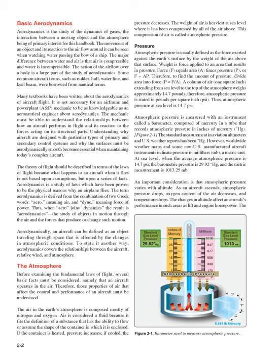Pressure: Atmospheric pressure is usually defined as the force exerted against the earth's surface by the weight of the air above that surface. Weight is force applied to an area that results in pressure: F = A × P. To find the amount of pressure, divide area into force: P = F/A. A column of air 1 inch² extending from sea level to the top of the atmosphere weighs approximately 14.7 pounds; therefore, atmospheric pressure is stated in pounds per square inch (psi). Thus, atmospheric pressure at sea level is 14.7 psi.